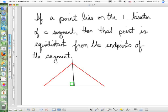Here are our theorems. This is really cool. This is where I just love... Well, you need to put it in your notes too. Here's where I love my smart board. The theorem states that if a point lies on the perpendicular bisector of a segment, then that point is equidistant from the endpoints of the segment.